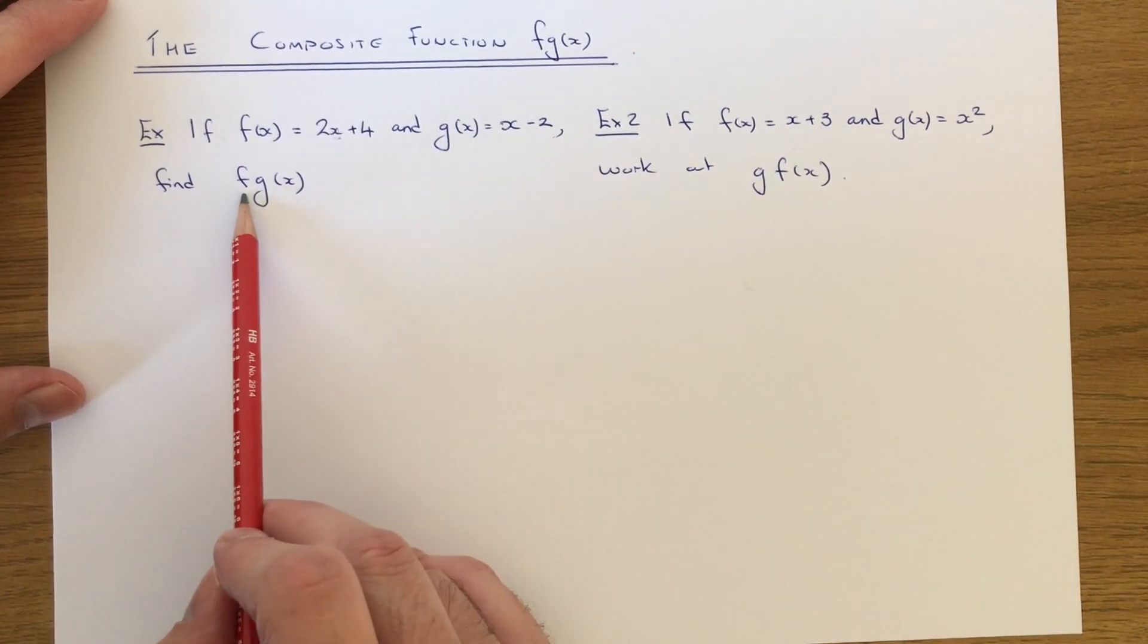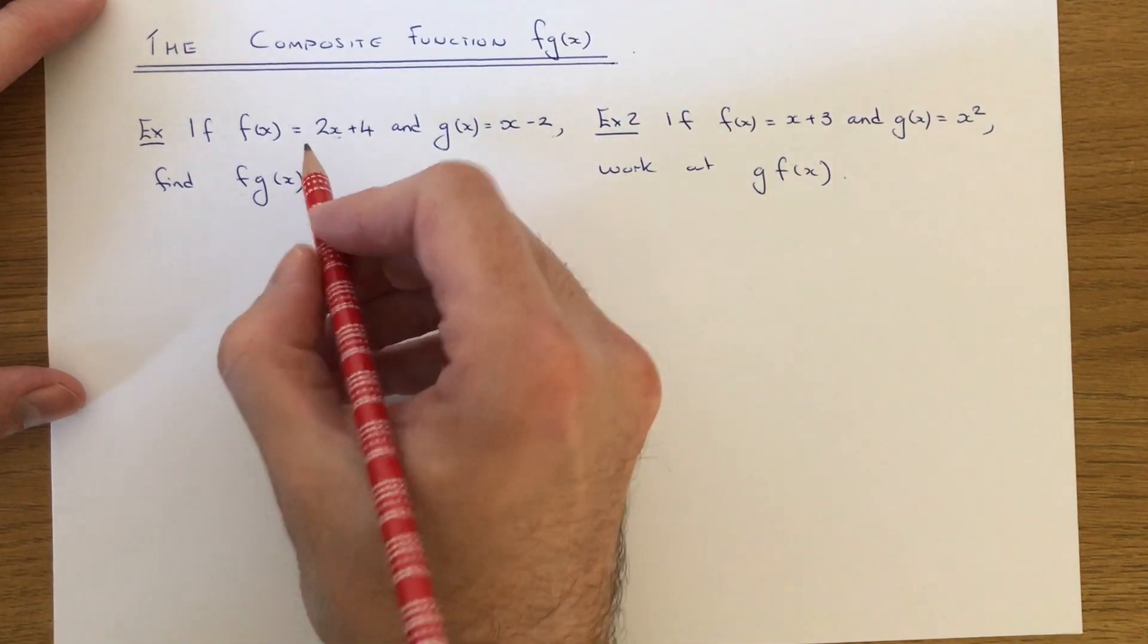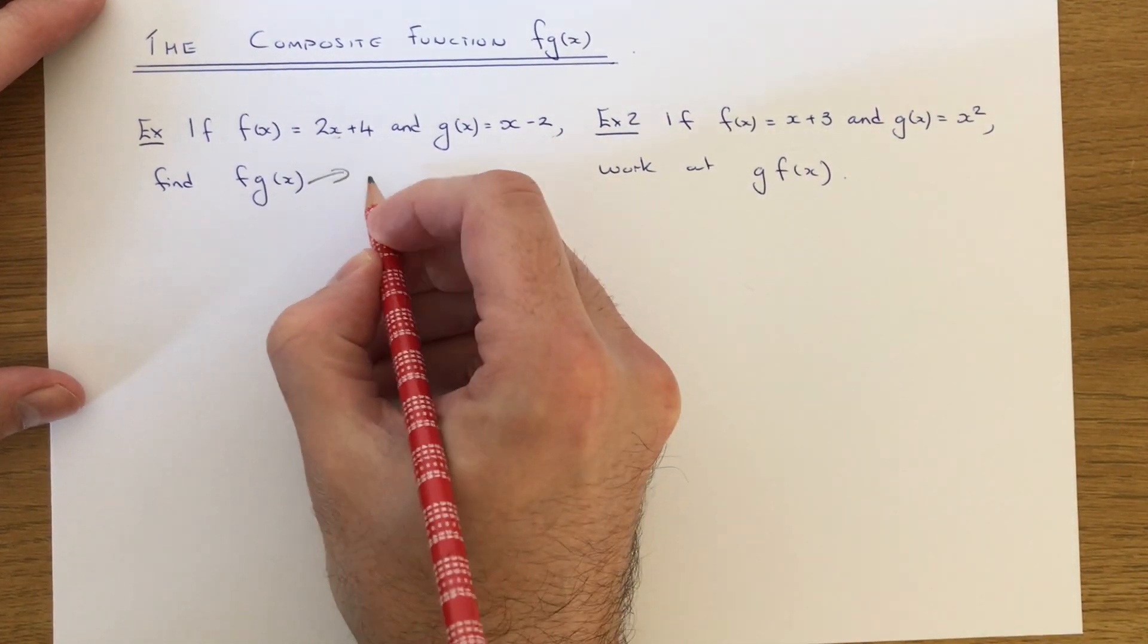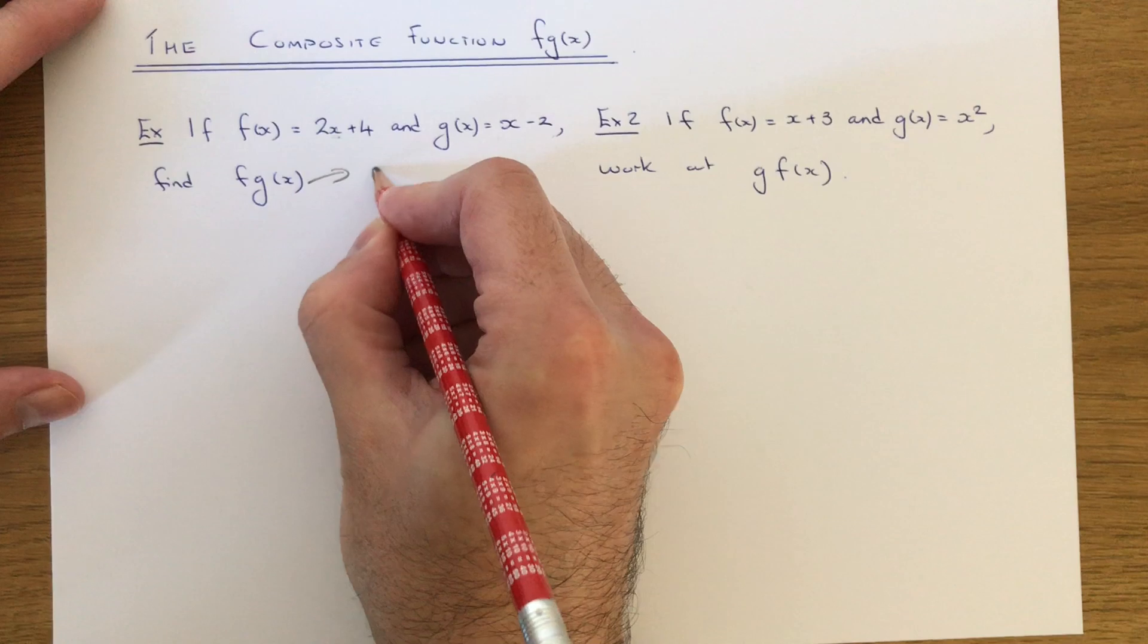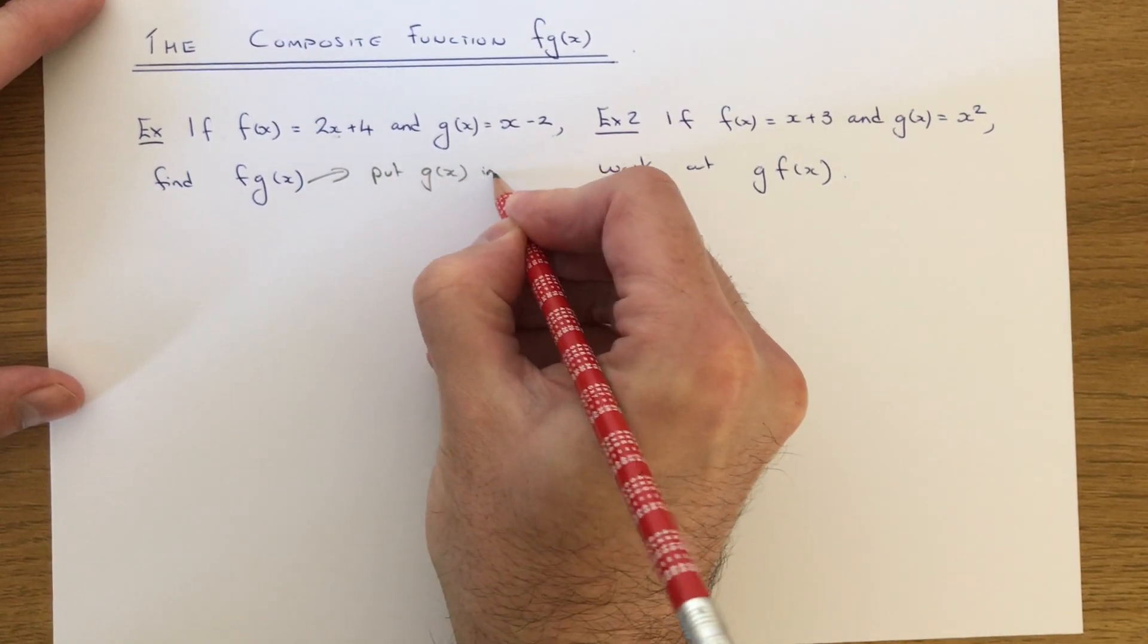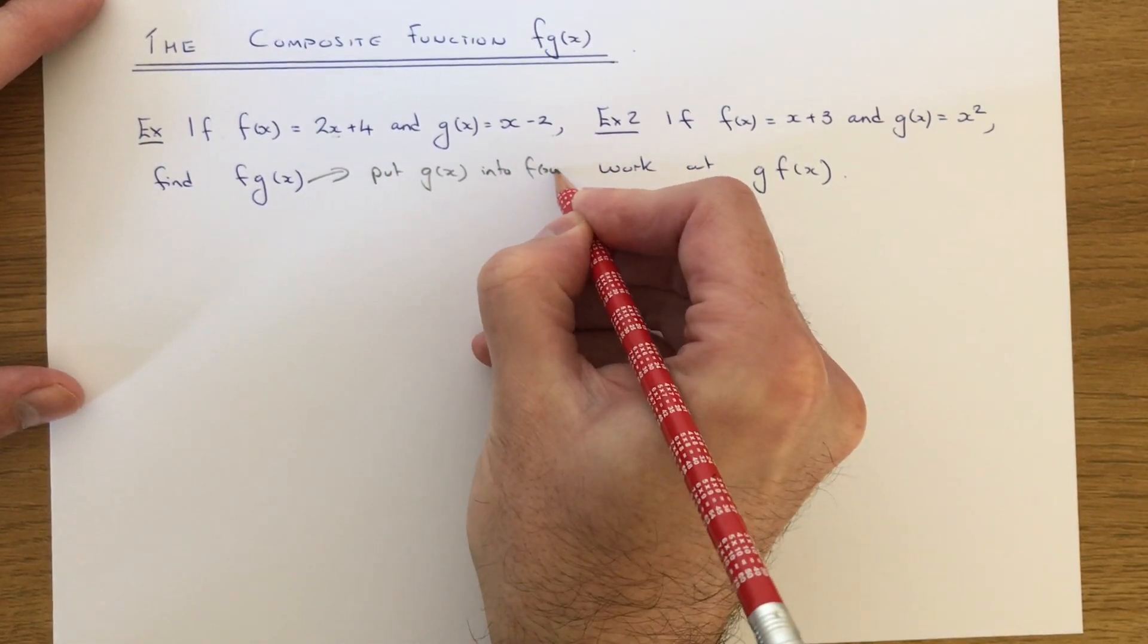And we're going to work out the composite function f g of x. What this means is that we need to put g of x into f of x.